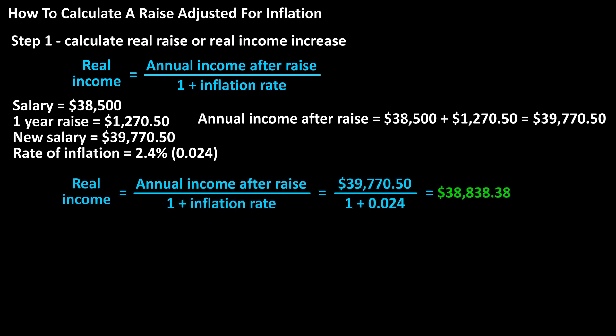Step 1 is to calculate their real income. Plugging into the formula, we have real income equals $39,770.50 divided by one plus 0.024, which calculates to $38,838.38.